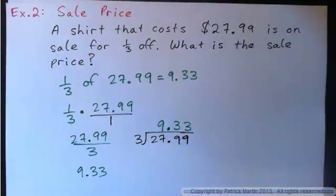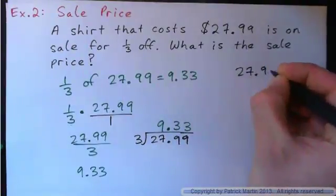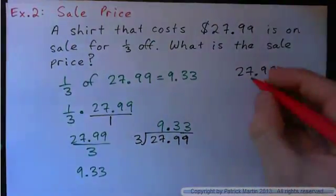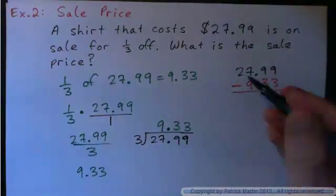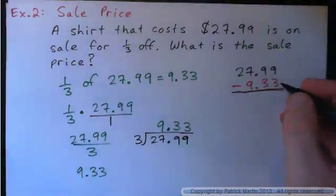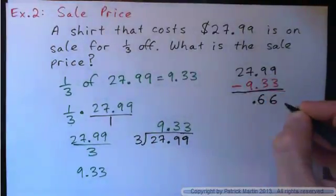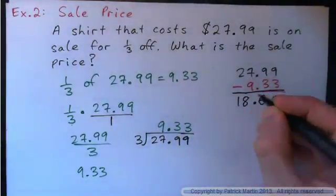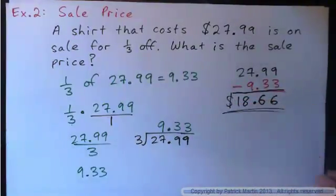But what's the answer to the question? That's not the answer to the question, is it? We found what a third of the price is, but it's on sale for a third off. So don't we have to take the twenty-seven ninety-nine and take the nine thirty-three off? Nine minus three is six. Nine minus three is six. Nine minus three is six. Twenty-seven minus nine is eighteen. So if I take the third off, I end up with eighteen dollars and sixty-six cents. This is the final answer.